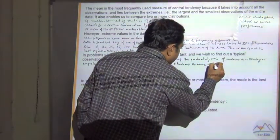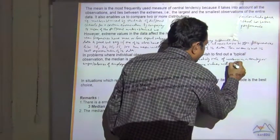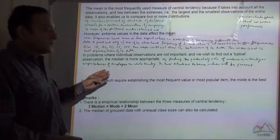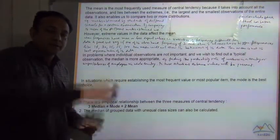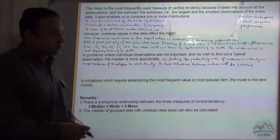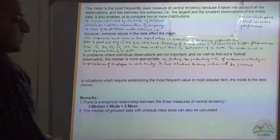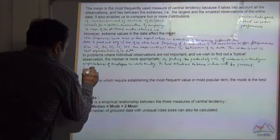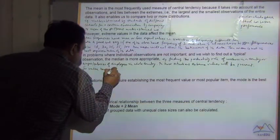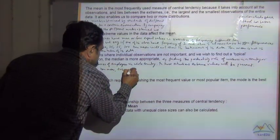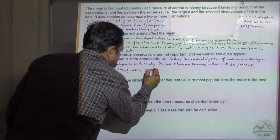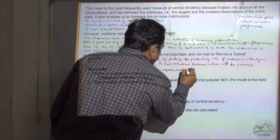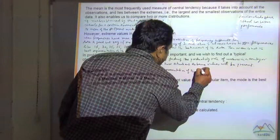Extreme values will be present. You may find some employees getting salary of 10,000 and some getting up to 10 lakh also. So there are a lot of extreme values present in this data. So rather than mean, taking median is the best representation of the data.